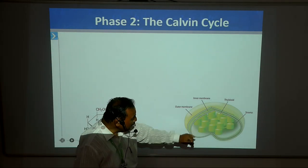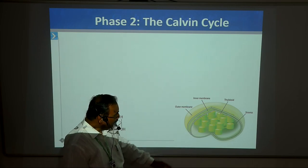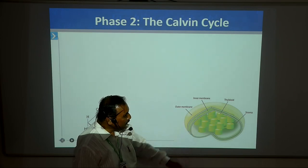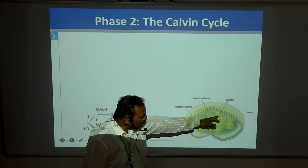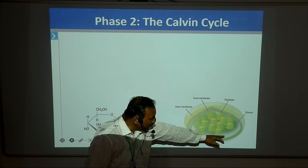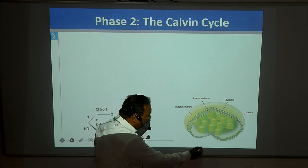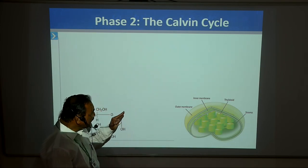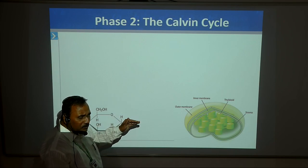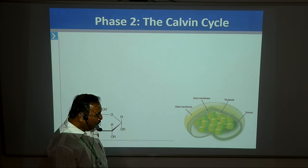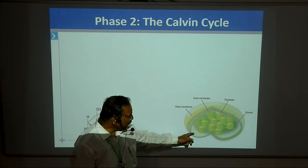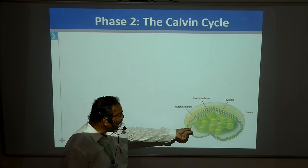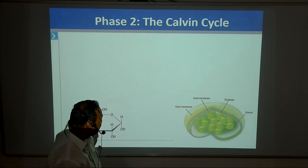Here, inside the stroma region — this is the inner membrane, this is the outer membrane. Inside this inner membrane, some enzymes are present. On this thylakoid membrane, this is the stroma region where dark reactions take place. Different enzymes are located in this stroma region. We know that the stroma region and the grana region are interconnected with the help of stroma lamellae, as well as grana lamellae.